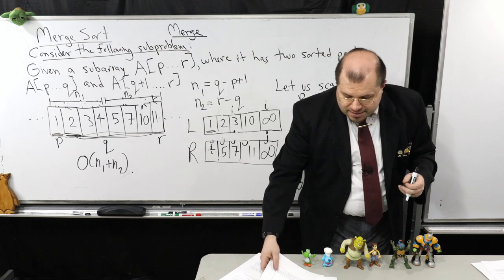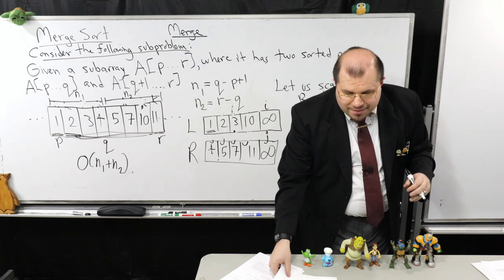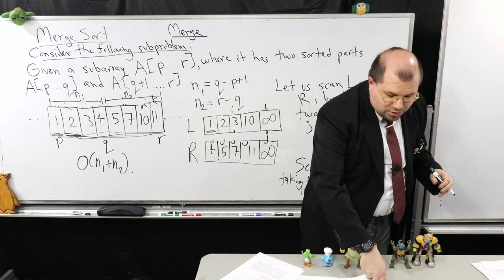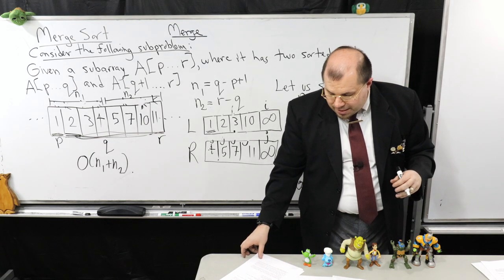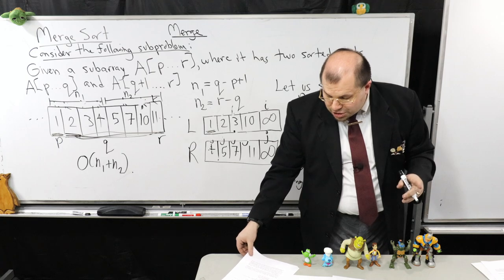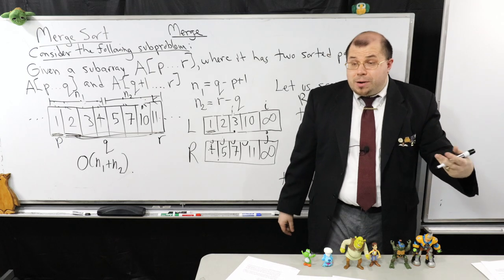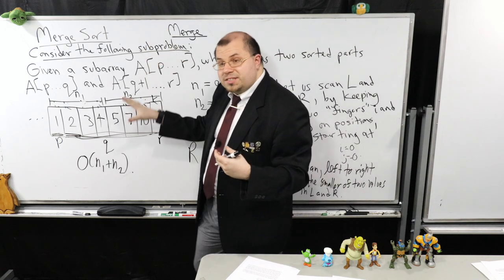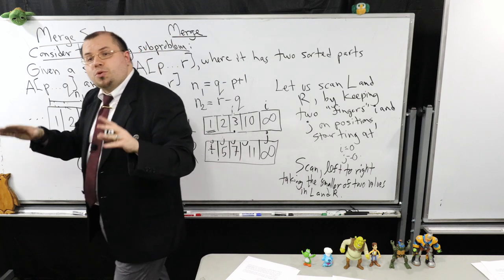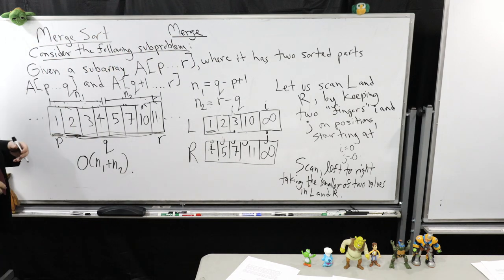The overall running time is big O of N1 plus N2, which is at most big O of N — so it's still linear in the number of elements I'm looking at. The next ingredient I need is Merge Sort itself. So that's merge — but now we have to talk about how we use this. This solves our subproblem; we're going to use this to design Merge Sort.